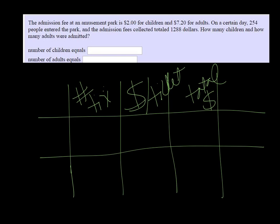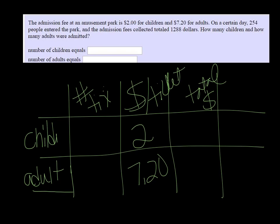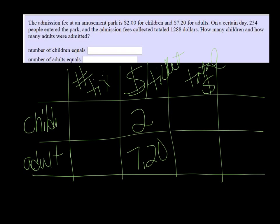So we have children, and we have adults. It said that the price per ticket for children is $2, and for adults it's $7.20. And that we sold a total of 254 tickets. So we kind of need a total line down here.